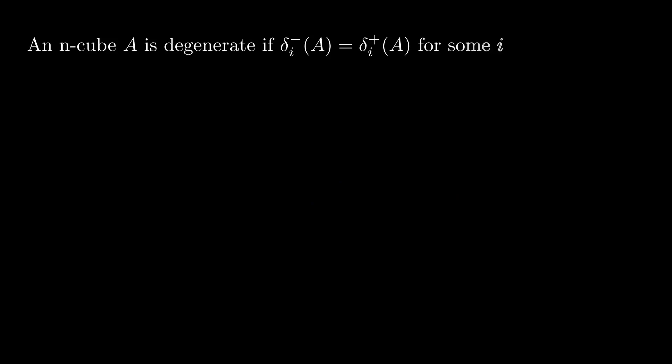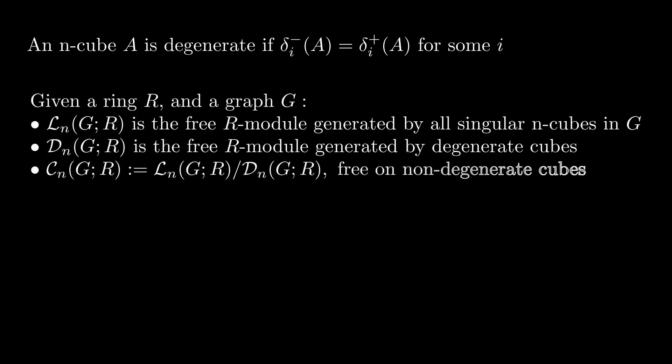Given a singular n-cube in our graph a, we say a is degenerate if the i-th negative and i-th positive faces are equal for some i, and these degenerate cubes kind of look like maps from a lower-dimensional cube into our graph g. Given a ring r and a graph g, we can then define Lng to be the free r-module generated by all singular n-cubes in g. We let Dng be the free r-module generated by all degenerate cubes, and Cng be this quotient Lng by Dng, and this is the free r-module on non-degenerate cubes.